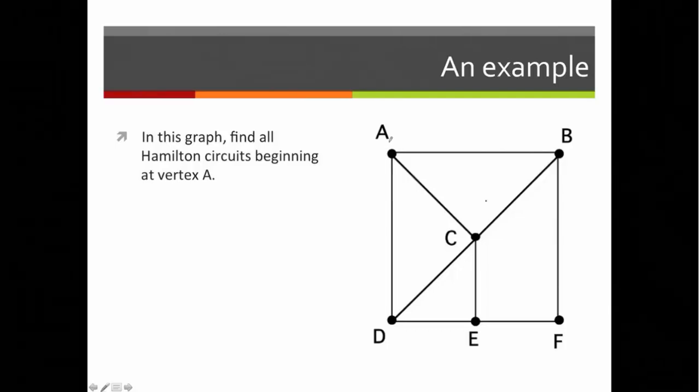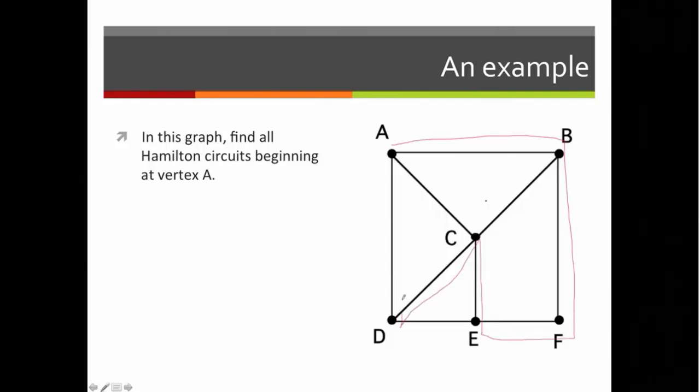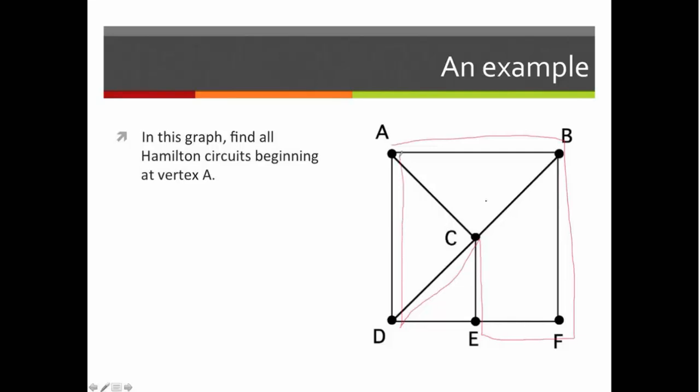So let me just draw that. I said we start at A, we go to B, we then go to F, then to E, then to C, then to D, and then back to A. That is our Hamilton circuit.